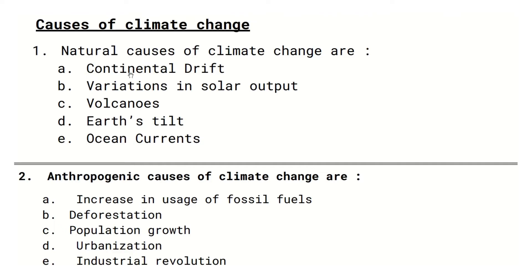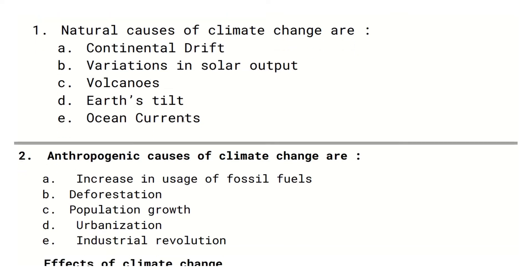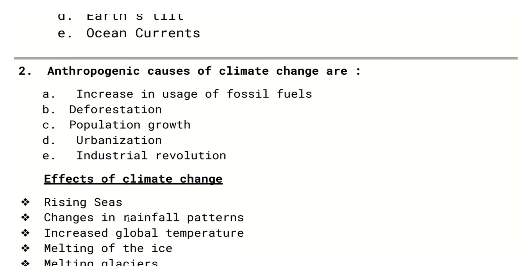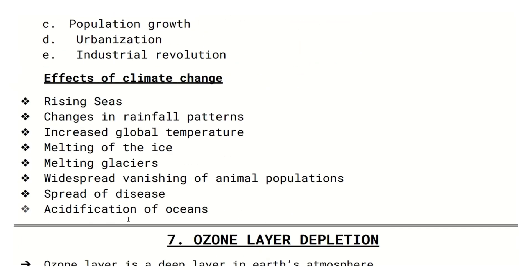Natural causes of climate change include: continental drift, variations in solar output, volcanoes, changes in earth's orbit, and ocean currents. Anthropogenic causes include: increased usage of fossil fuels, deforestation, population growth, urbanization, and industrial revolution.